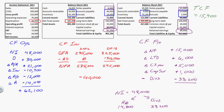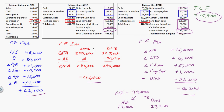So my cash flow from financing is minus $6,200. Now I add the cash flow from operations, investing, and financing together — and they add up to that total cash flow of $15,900. So I've done this correctly. And that's it.